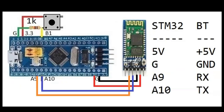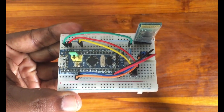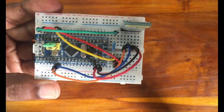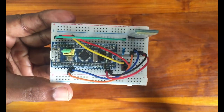The wiring diagram is like this. I have a button — one side connected to PB1, the other side connected via a 1K resistor to ground, and the other side of the button connected to 3.3V. For the Bluetooth module I'm connecting four pins: 5V to 5V, ground to ground, A9 to RX, A10 to TX. The wiring connection for the button module is here, the Bluetooth wires are here, and the resistor is connected like this.